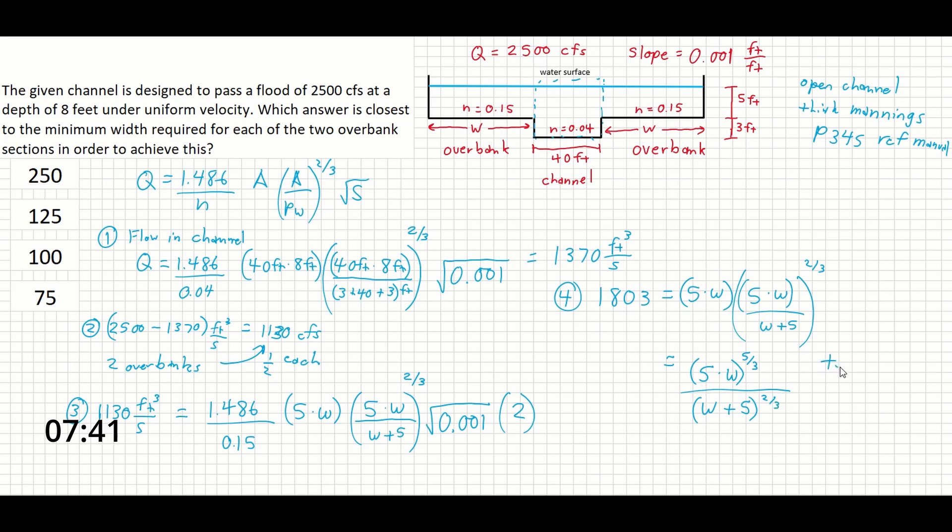So let's assume that W equals 125, since that's one of the two middle terms to start with. So if W equals 125, we could plug that into here, and 5 times 125 to the 5 thirds, over 125 plus 5 to the 2 thirds. And solving that in your calculator should be doable enough. And that's going to get us to about 17.80.